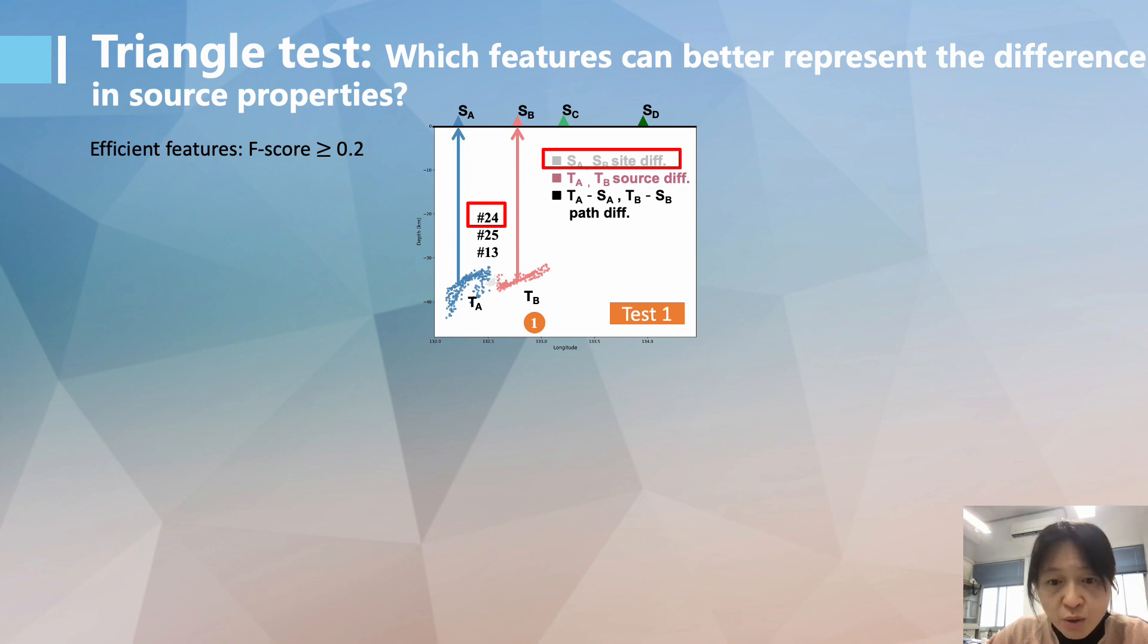And for each test, we consider an F-score, which is computed by the ratios of inter-class scatter and intra-class scatter in feature dimensions to define the efficient features. The efficient features are determined when the F-score is higher than 0.2.